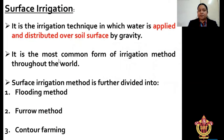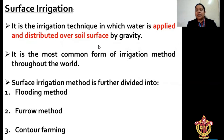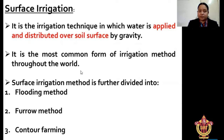First one is the surface irrigation. Surface irrigation is the irrigation technique in which water is applied and distributed over the soil surface by gravity. It is the most common form of irrigation method throughout the world. Surface irrigation method is further divided into flooding method, furrow method, and contour farming.